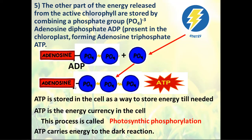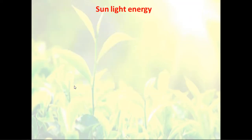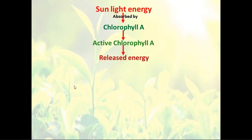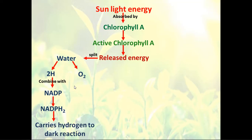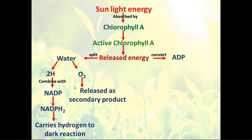ATP is also moved to the dark reaction. So two things enter the dark reaction from the light reaction: the hydrogen carried by NADP in the form of NADPH₂, and energy carried in the form of ATP. In summary: light energy absorbed by chlorophyll A makes it active; the active chlorophyll A releases energy; some of this energy splits water, giving two hydrogens and one molecule of oxygen. The hydrogen combines with NADP to give NADPH₂, which goes to the dark reaction. Oxygen is released as a secondary product. The other part of the energy converts ADP into ATP.